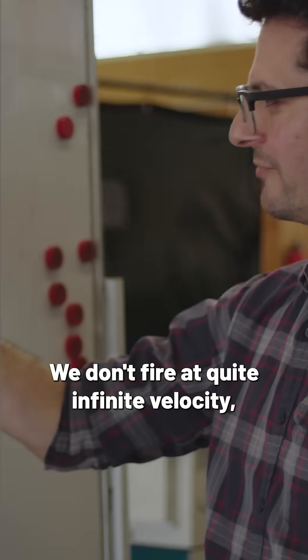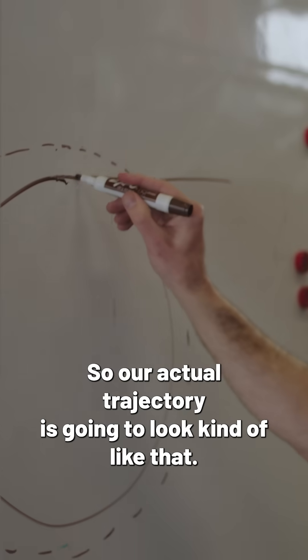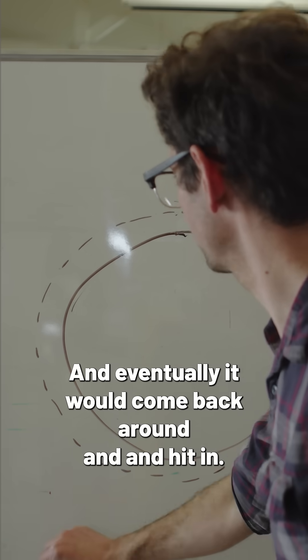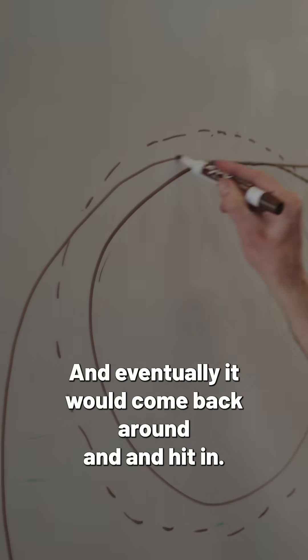We don't fire at quite infinite velocity, we fire pretty fast. So our actual trajectory is gonna look kind of like that and eventually it would come back around and hit in.